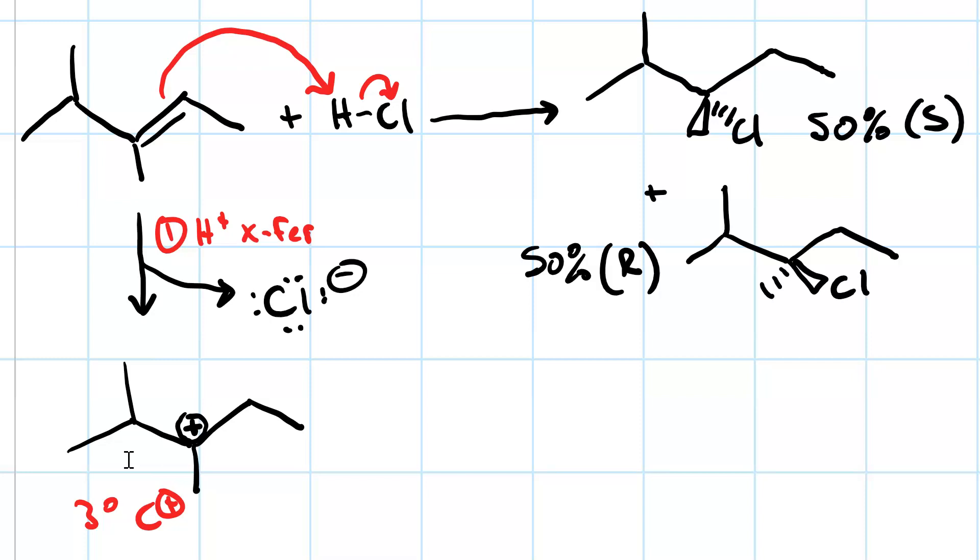In the next step, the chloride ion attacks, and it can attack above the plane of the carbocation, which gives us the R isomer with the chlorine on the wedge.